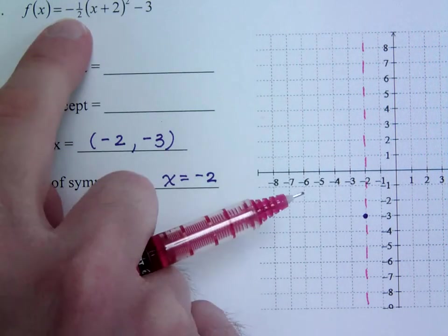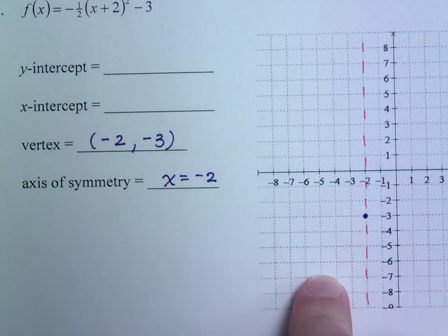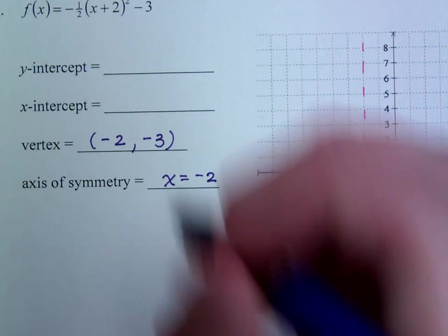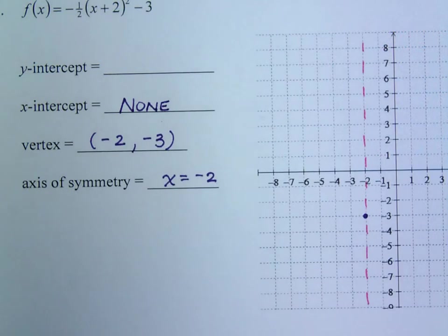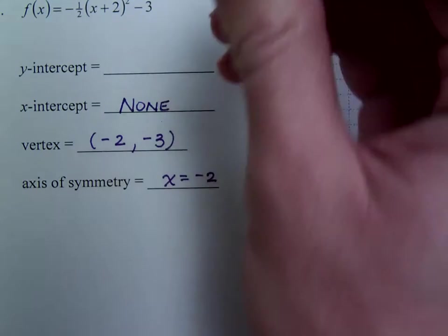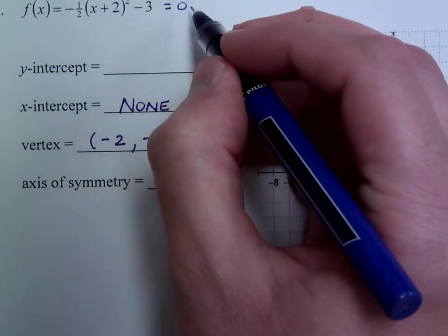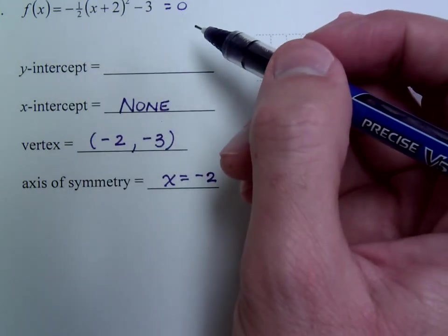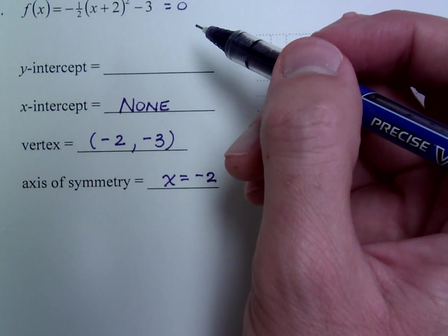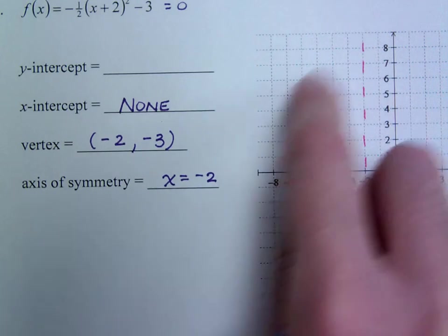Now, since you have a negative 1 half here, you're going to be opening upside down. If I'm opening upside down, I won't have any x-intercepts. So don't say no solution, you would just say that there are none. You could also go through the whole process of setting this equal to 0. If you set this equal to 0 and try to solve it, you'd have a positive 3 on the other side. Divide by the negative, you're going to end up with a square equal to a negative, which would only lead you to imaginary numbers. And that's not going to give you anything resembling x-intercepts.